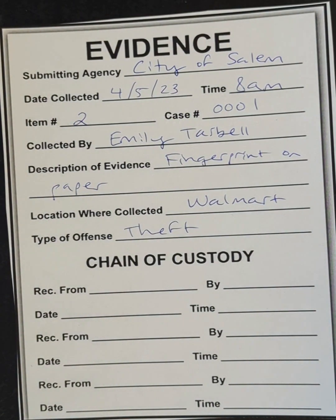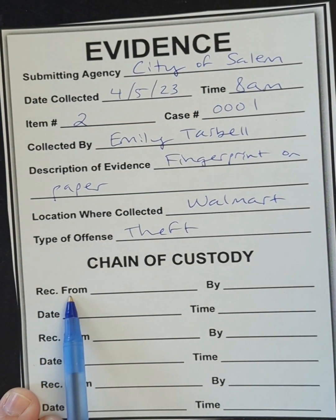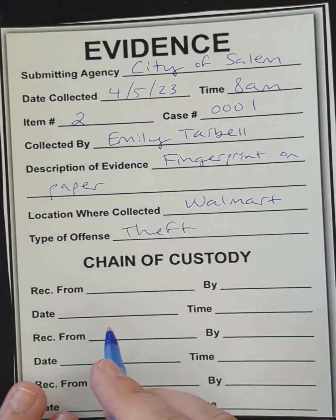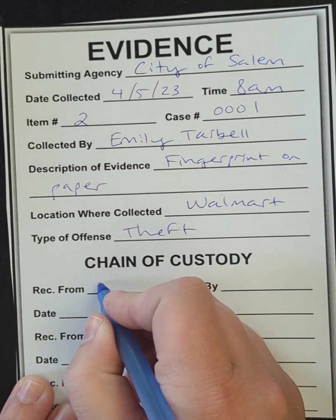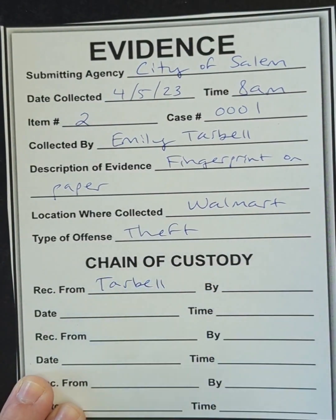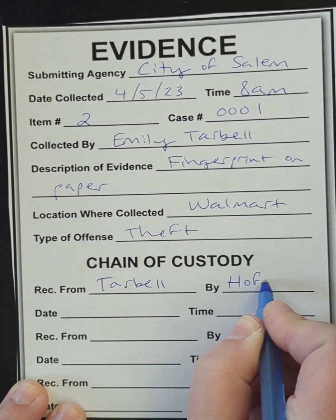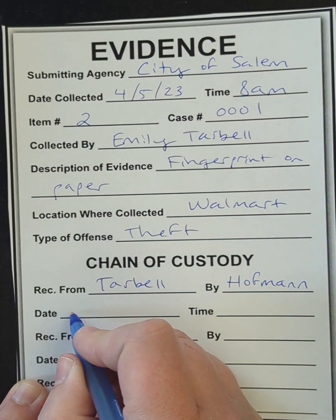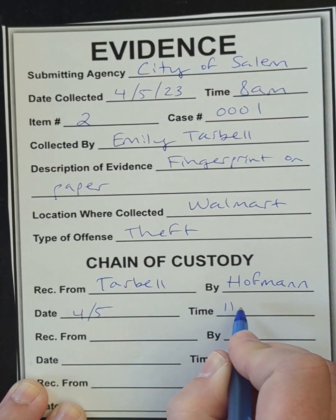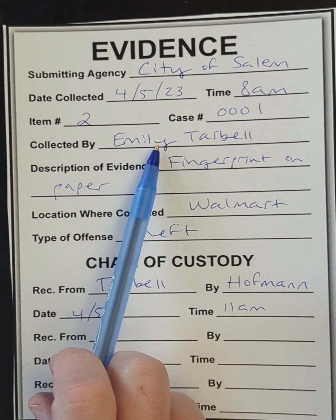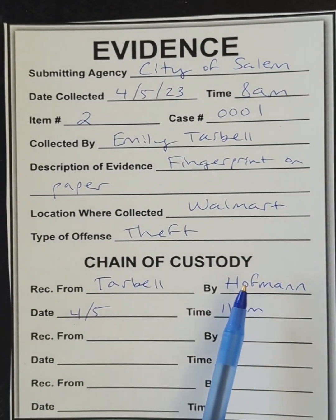This is where some people can get a little confused when we're trying to figure out received, from, by, date, and time. I'm the one who collected the evidence, so whoever is receiving it is receiving it from me. So received from Tarbell. Let's say Mr. Hoffman is the one I'm giving it to — so Hoffman, on the same day, at 11 a.m. Now we know exactly who has had it: I collected it, it came from me to Hoffman, and now it's in Hoffman's possession.